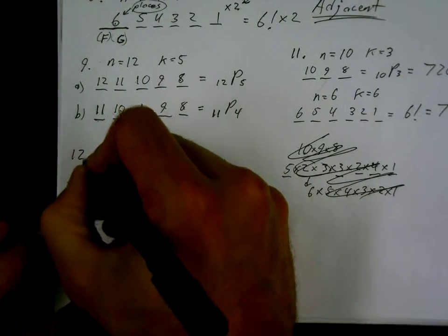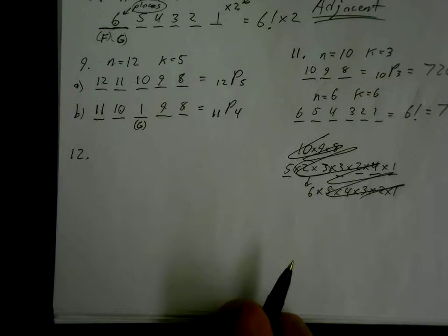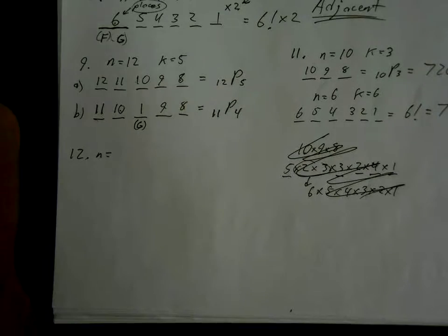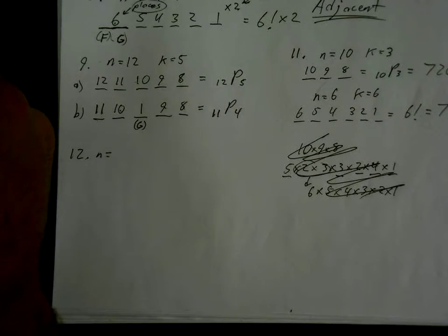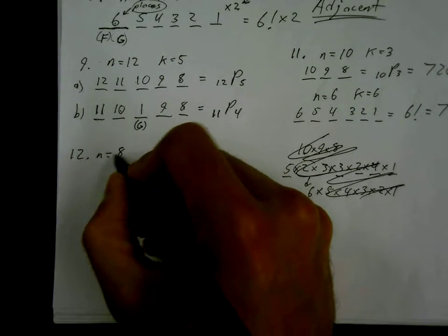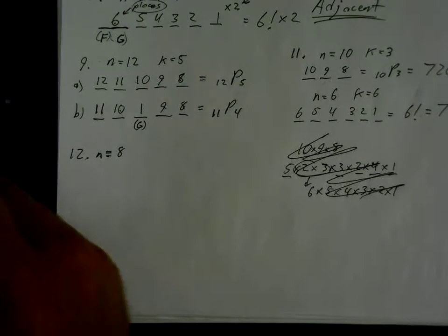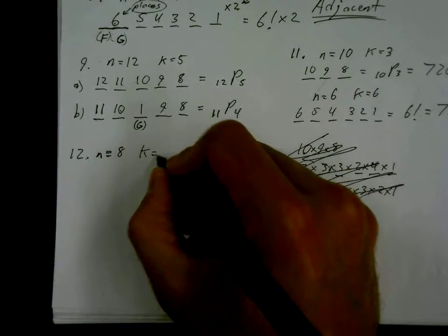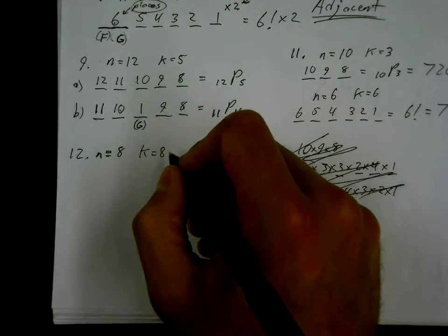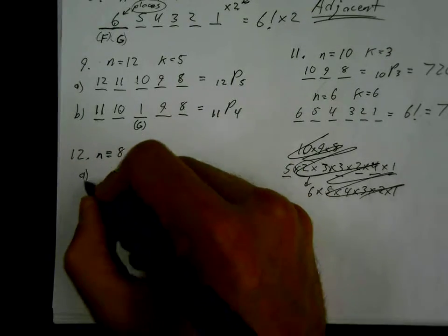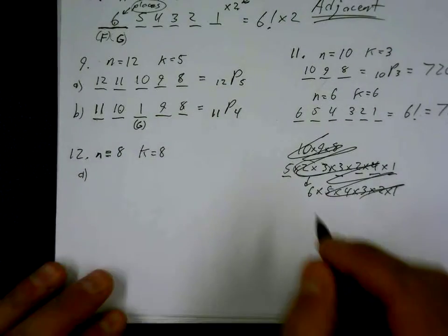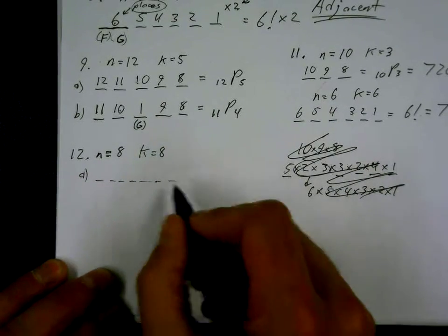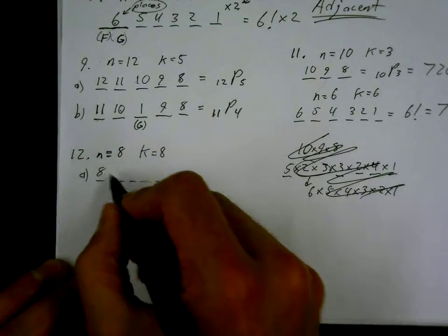Question twelve: find the number of ways of arranging the letters of MATCHING. n = 8, since MATCHING has eight letters, and we're assuming a full permutation — arrange all the letters. Part a, no restrictions: starting at 8 and counting down gives 8 × 7 × 6 × 5 × 4 × 3 × 2 × 1 = 8!. Once you get the hang of things, you don't need to fill out seats for easy cases like this.